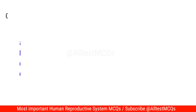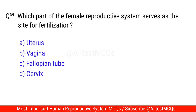Question No. 39: Which part of the female reproductive system serves as the site for fertilization? The right option is C. Fallopian tube.